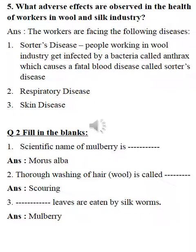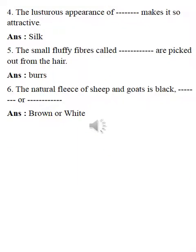Third number: blank leaves are eaten by silkworms — answer is mulberry leaves. Next one: the lustrous appearance of blank makes it so attractive — answer is silk, as silk is very attractive. Next number: the small fluffy fibers called blank are picked out from the hair — answer is burrs. Very minute hairs seen on woolen clothes are called burrs.